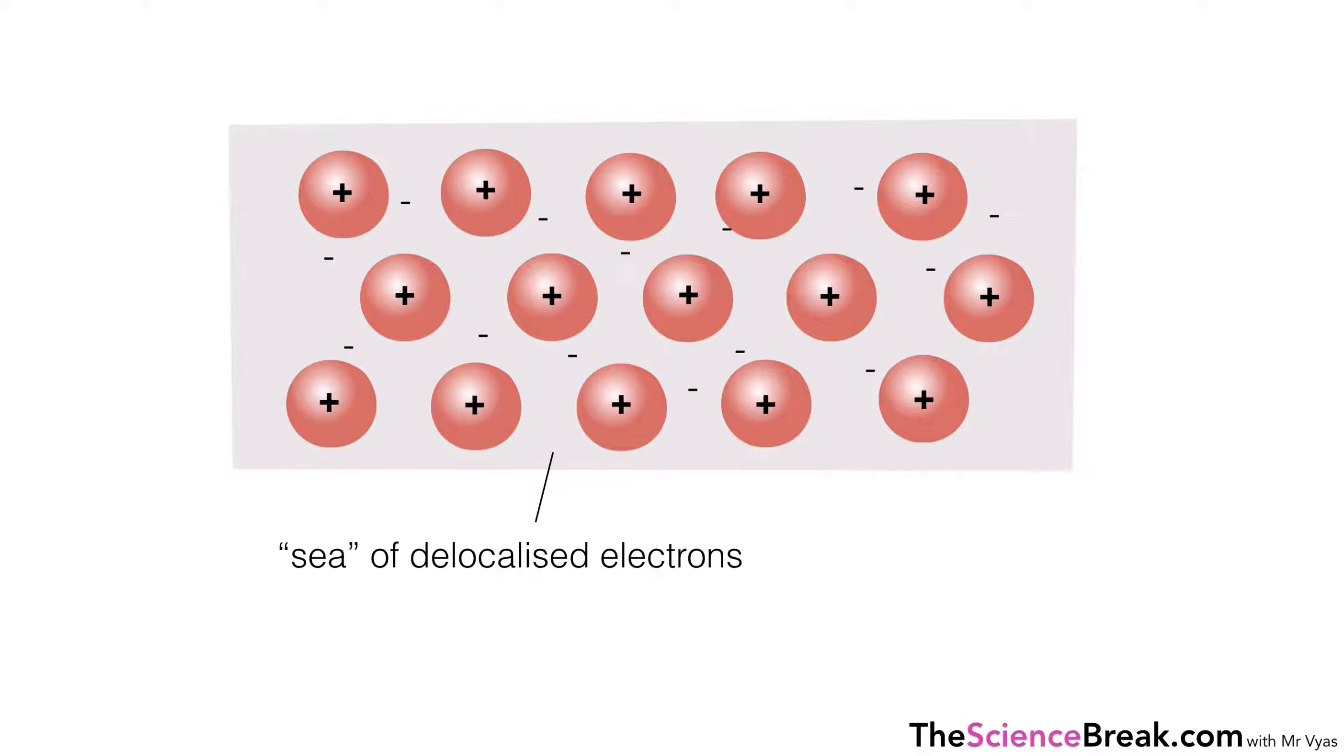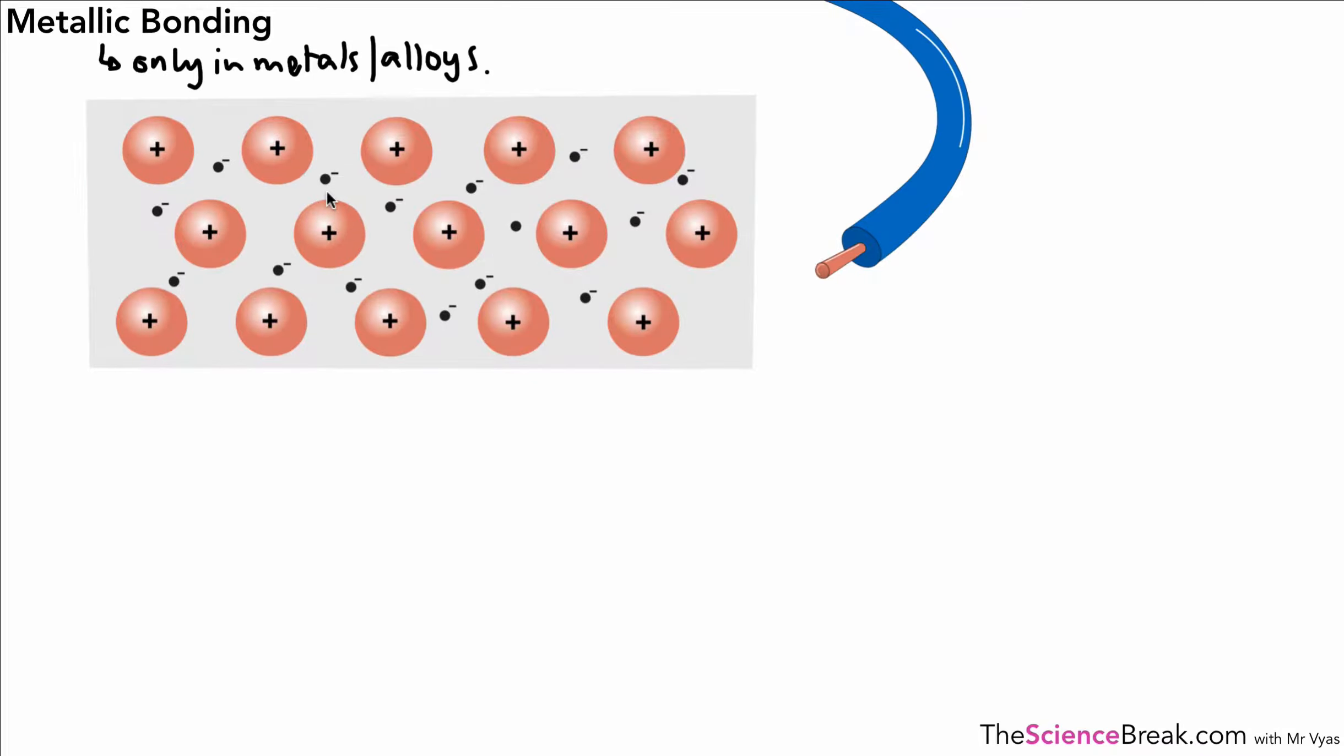We can take a look at that in one or two other ways that you should be able to recognize. The first way here we just talked about already, so we can see that we've got the positive ions and the sea of electrons as we just saw. And as you saw again, the ions are attracted to the negative area in between each of those ions there.